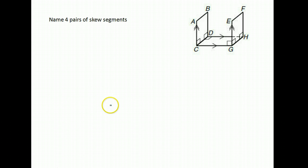Let's name four pairs of skew segments. So remember skew means two lines that are never going to intersect. And the reason they're never going to intersect is because they're on different planes. Okay, so that is what we mean by skew.